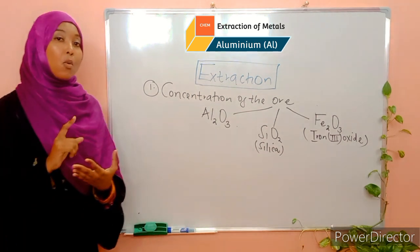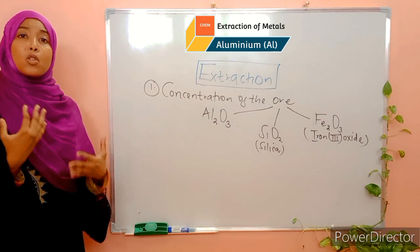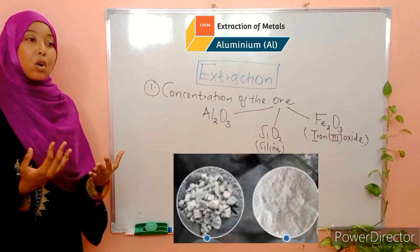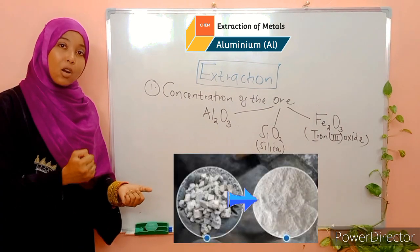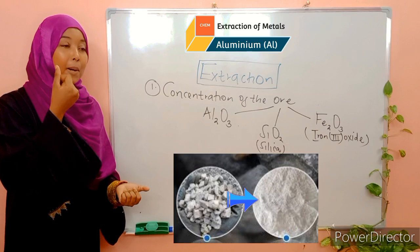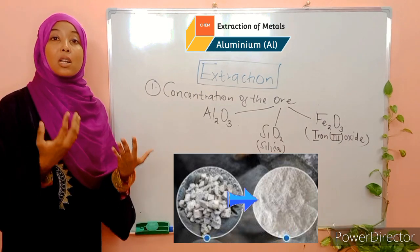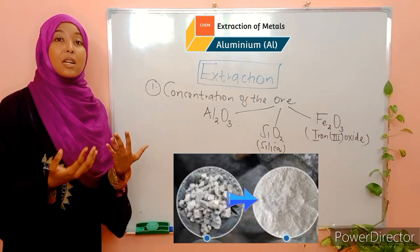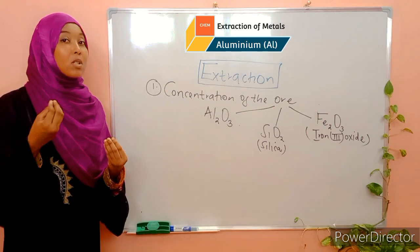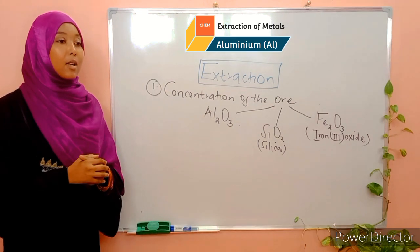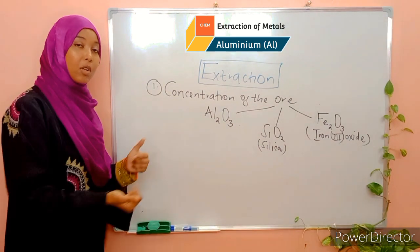Step number one: the ore is crushed. When we talk about crushing of the ore, it simply means grinding of the ore into a fine powder. This is to increase the surface area of the ore that will come into contact with the chemicals that will be added, which in turn speeds up the rate of the reaction.